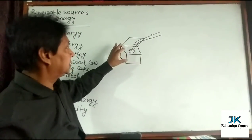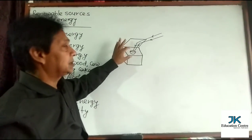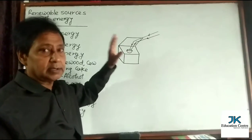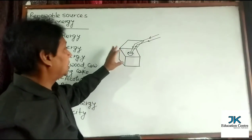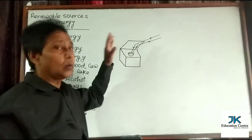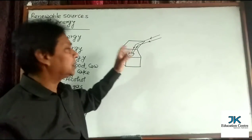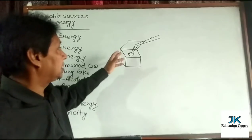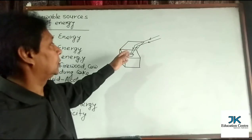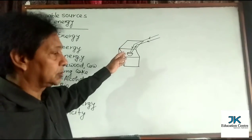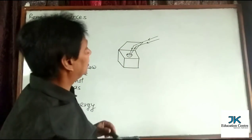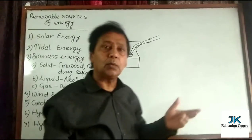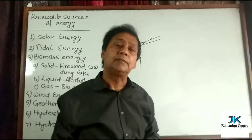Solar energy is utilized for cooking purposes, but there are some limitations. We must have the Sun in the sky to use this, and we have to go to an open place. That's why there are limitations, but this is the working principle of the solar cooker.